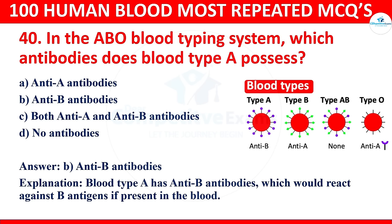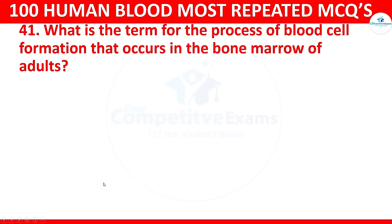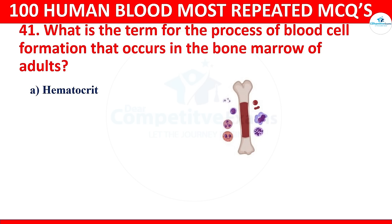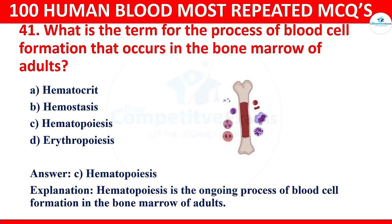Question 41: What is the term for the process of blood cell formation that occurs in the bone marrow of adults? Options: hematocrit, hemostasis, hematopoiesis, or erythropoiesis. The correct answer is hematopoiesis. Hematopoiesis is the ongoing process of blood cell formation in the bone marrow of adults.